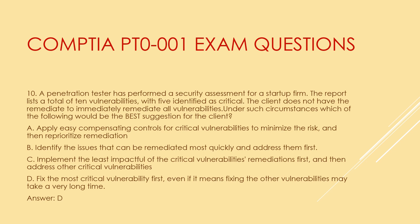Question 10. A penetration tester has performed a security assessment for a startup firm. The report lists a total of 10 vulnerabilities, with 5 identified as critical. The client does not have the resources to immediately remediate all vulnerabilities. Under such circumstances, which of the following would be the best suggestion for the client? A. Apply easy compensating controls for critical vulnerabilities to minimize the risk, and then reprioritize remediation. B. Identify the issues that can be remediated most quickly and address them first. C. Implement the least impactful of the critical vulnerability remediations first, and then address other critical vulnerabilities. D. Fix the most critical vulnerabilities first, even if it means fixing the other vulnerabilities may take a very long time. Answer: D.